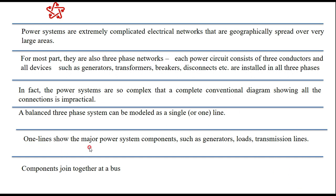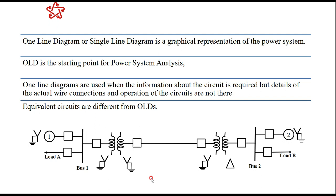The one-line diagram is the graphical representation of the power system on a per-phase basis. Major power system components such as generators, loads, and transmission lines are shown with their symbolic representations, with components joined together at different buses. A one-line diagram or single-line diagram is the starting point of power system analysis.